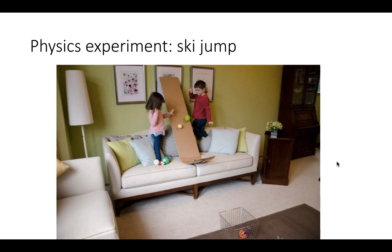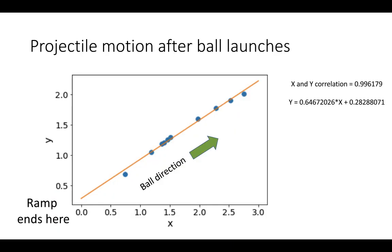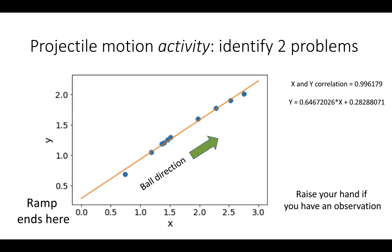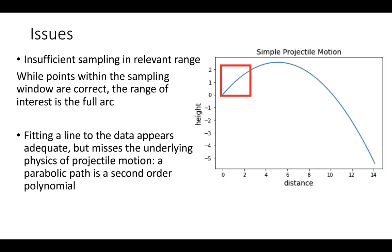I used to teach physics classes where I had undergrad students roll a ball down a ramp and off into a basket. They'd record a set of 10 data points and fit a line. The problem is that if you zoom into the wrong part of the curve, it does in fact look linear, but that ball trajectory is actually parabolic. Students would fit their data to the region of the curve that looks flat, but it wasn't actually.